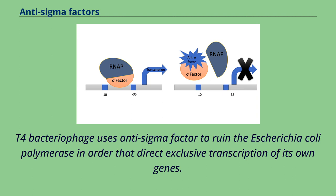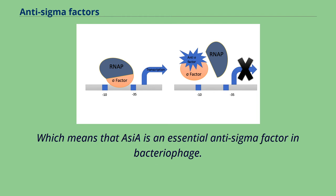T4 bacteriophage uses an anti-sigma factor to hijack the Escherichia coli RNA polymerase in order to direct exclusive transcription of its own genes. This means that AsiA is an essential anti-sigma factor in the bacteriophage.